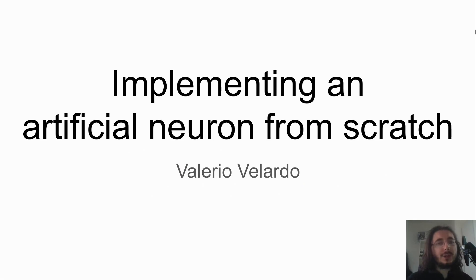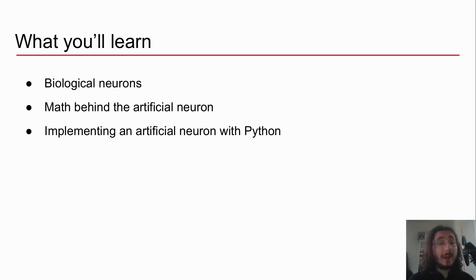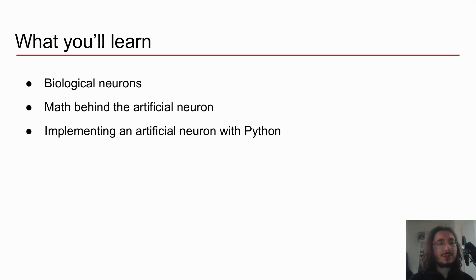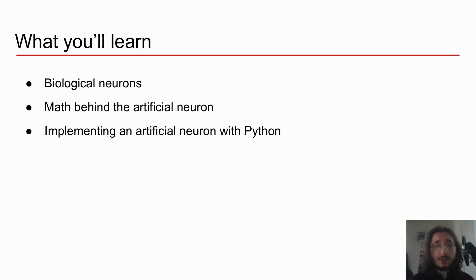Hi everybody and welcome to another video in the Deep Learning for Audio with Python series. This time around we're going to talk about artificial neurons — both the theory behind them and their implementation in Python. We'll have a quick look at biological neurons, then move on to artificial neurons to see how the math works, and finally implement an artificial neuron from scratch in Python.